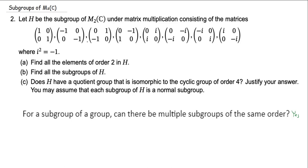One thing that will be helpful here is to compute the orders of the elements, and it's really good that part A is asking you to find all the elements of order 2. So I'm just going to write the element orders up above. One of these is very easy: the identity element, which is the identity matrix, has order 1. And then this here is actually the negative of the identity matrix, and if you square it you just square the negative 1 essentially, so this will have order 2.